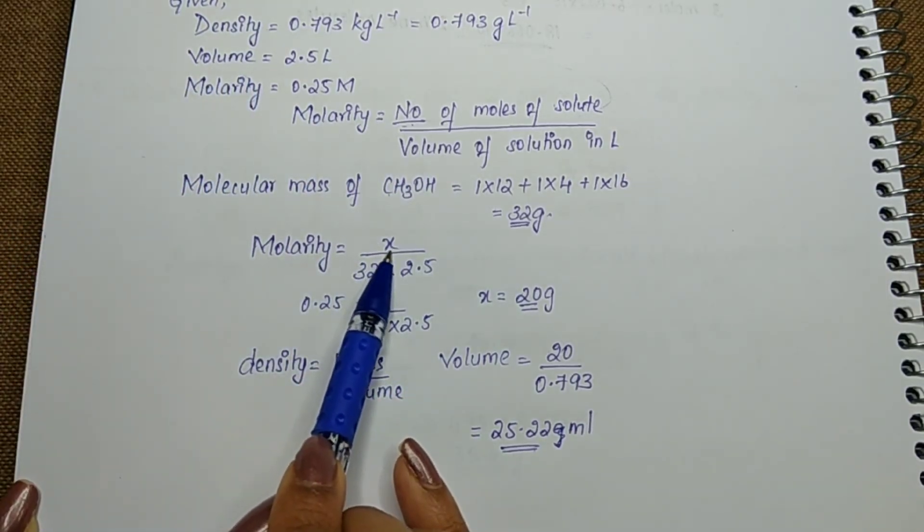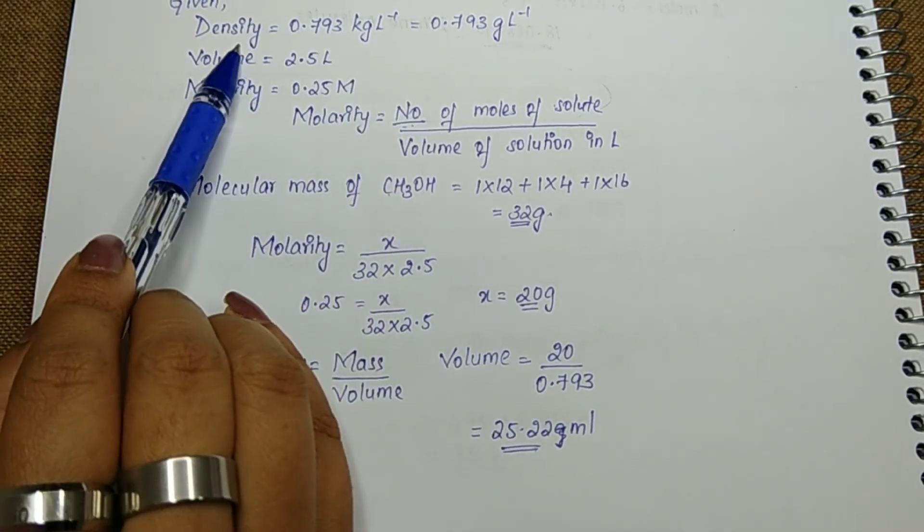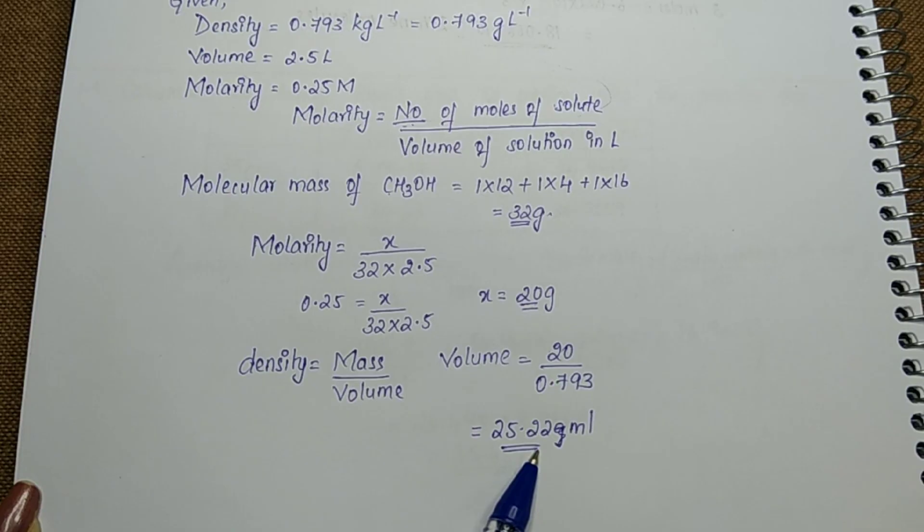This way, by having these parameters, use the molarity formula, find the unknown value which is the given mass, then use the density value to find the volume in ml.